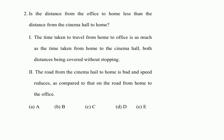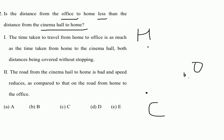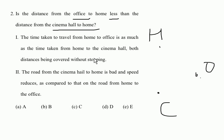The next question is: is the distance from office to home less than the distance from cinema hall to home? Let's say we have home, office, and cinema hall. Statement one says the time taken to travel from home to office is the same as the time taken from home to cinema hall, both distances covered without stopping. Statement two says the road from cinema hall to home is bad and speed reduces compared to that on the road from home to office.